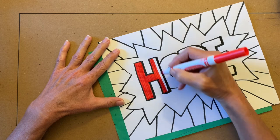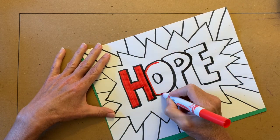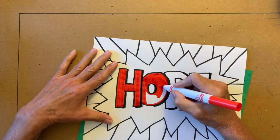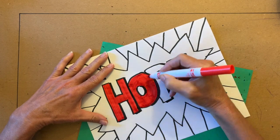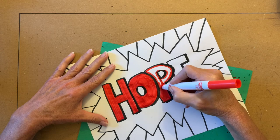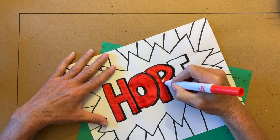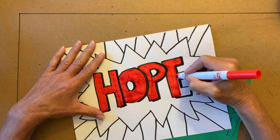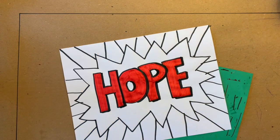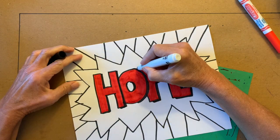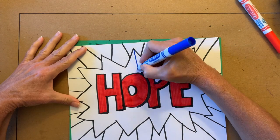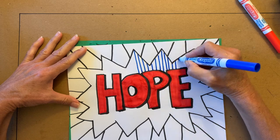Roy Lichtenstein limited his color palette to red, yellow, blue, black, and white so I used those colors too. I filled in the letters with red and placed blue stripes around them.